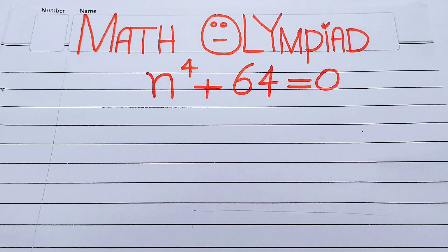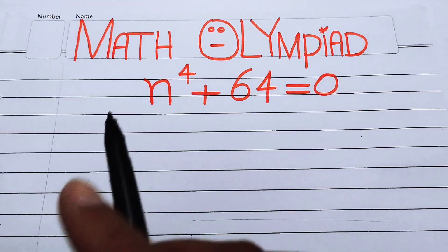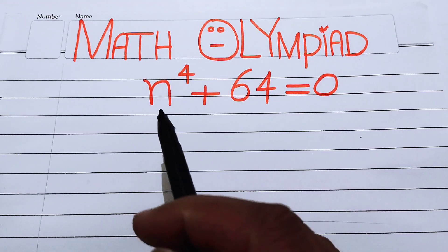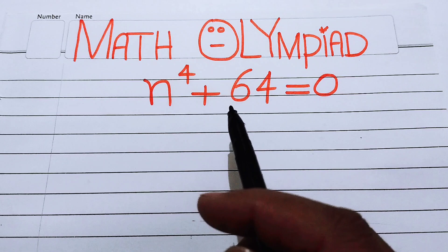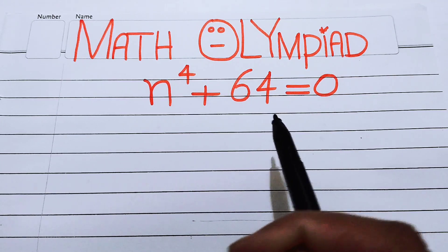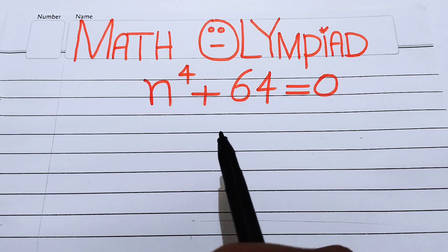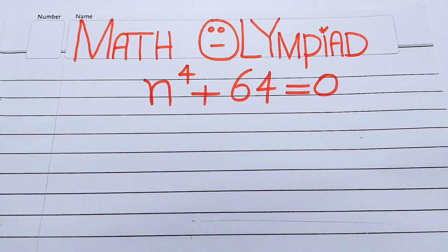Hello everyone, welcome back to the Map of Mathematics. In this video we are going to solve this nice algebra problem: n to the power of 4 plus 64 equals 0. We will solve this problem for the values of n — finding all the roots of this equation.